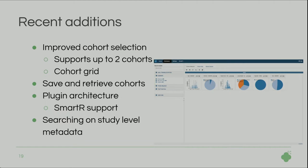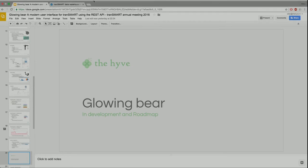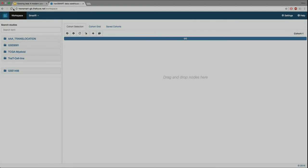Recent additions include: support for up to two cohorts (previously only one), work on the cohort grid, the ability to save and retrieve cohorts, the plugin architecture with SmartR support, and searching on study-level metadata via free text search. Let me now go to the live demo of the new UI. When you first go to the new UI, you get prompted with a login screen, and an additional authentication step because it's using the REST API, where you authorize it to use the REST API.